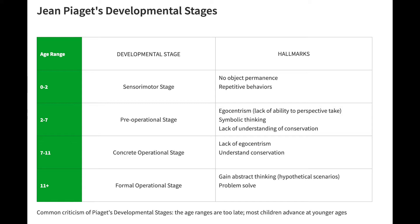Let's jump right into the first stage, the sensorimotor stage. The sensorimotor stage is marked by sensing and motoring, or sensing and physically reacting to the world. Two hallmarks make up the sensorimotor stage. The first is repetitive behaviors, which are also called circular reactions due to their cyclical or repetitive nature.